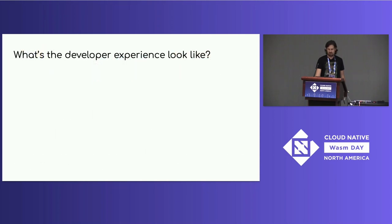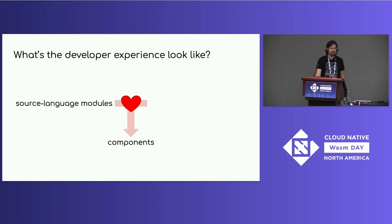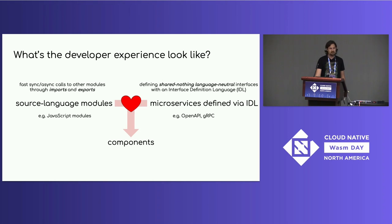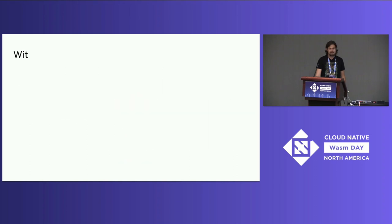So what does the developer experience look like? Components are sort of like the love child of two familiar things: source language modules like JavaScript modules, where we're doing fast sync and async calls through imports and exports; and microservices defined via IDL like OpenAPI or gRPC, where we define shared-nothing interfaces in an IDL and derive language-specific bindings from that. That raises the question: what's the IDL for components? The WASI subgroup has been working on that for a while and it's called WIT.